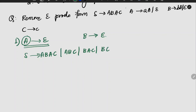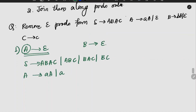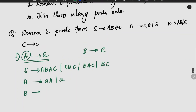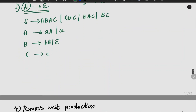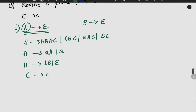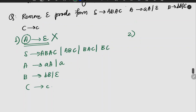This is the difference when removing epsilon. A gives a, a, a — this is epsilon case. B gives b, b, and it will not change. C gives c, and it will also not change. So the epsilon production for A is removed.